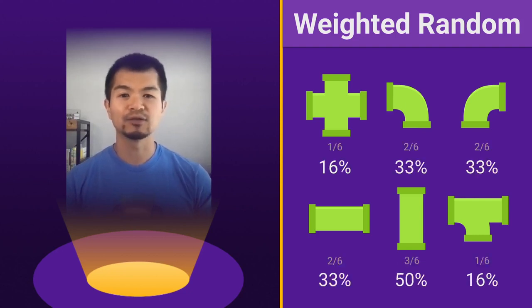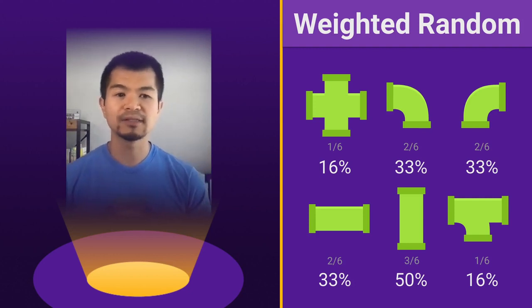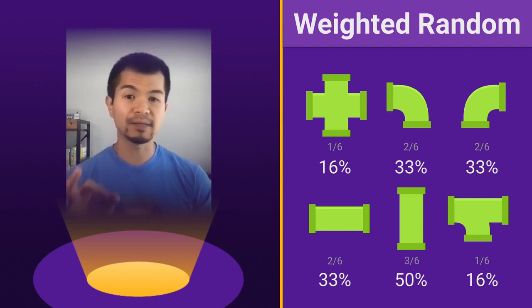Let's look at the percentage first. So this would be the percentage: a 16 percent chance of getting the cross pipe, a 33 percent chance of getting the corner pipe, and a 50 percent chance of getting the straight vertical pipe. So let's see how we actually do that with a weighted table in JavaScript.